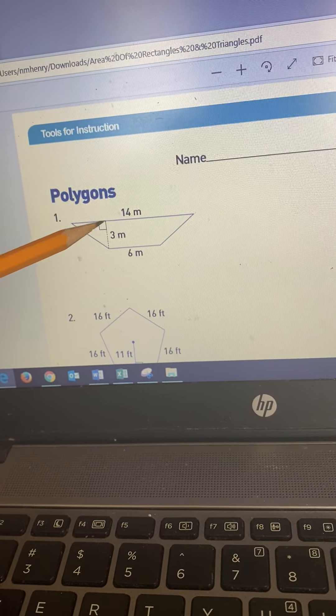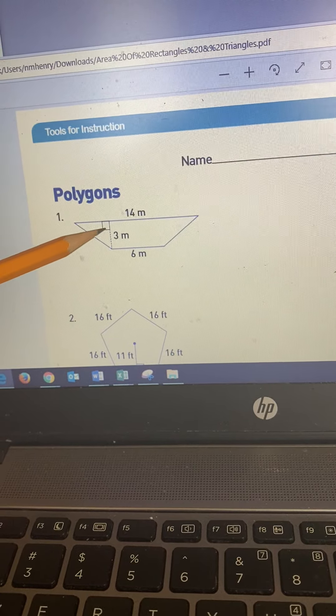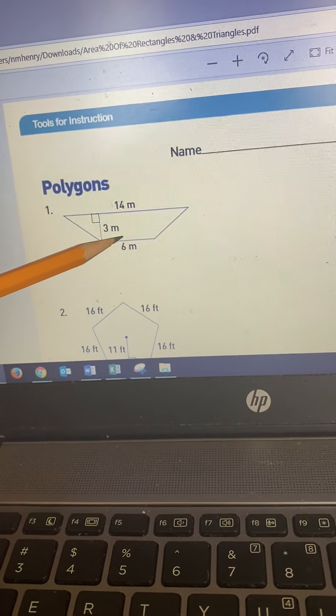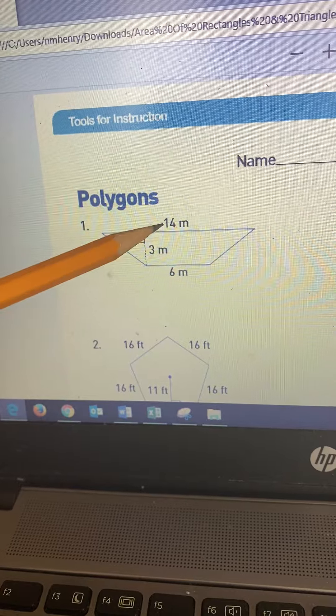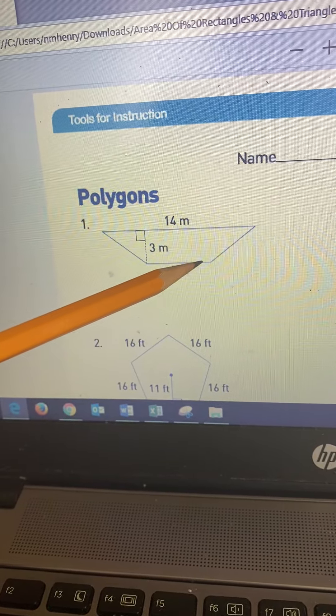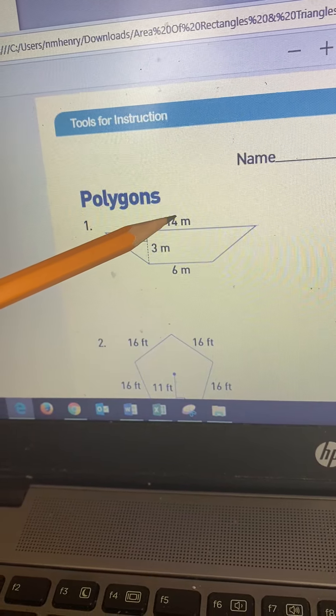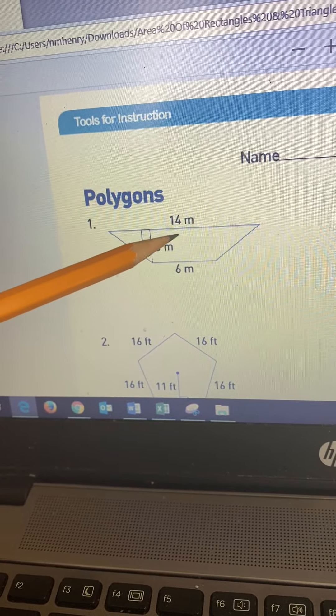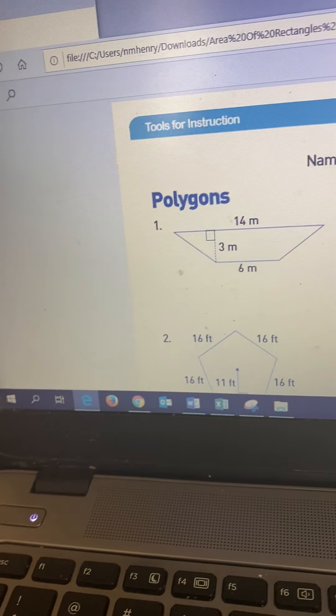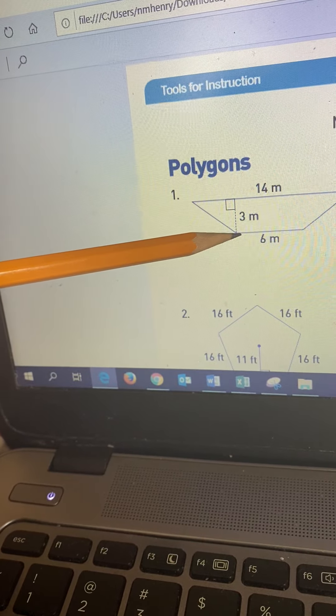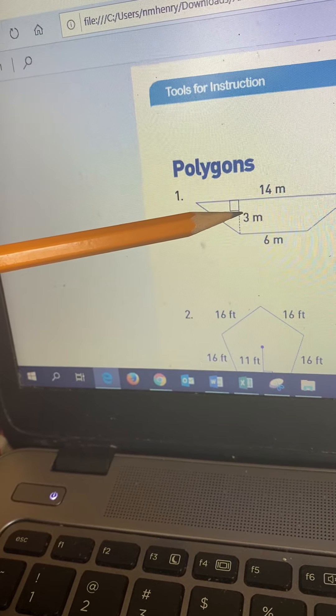Now right here we have this figure here is a trapezoid. Now a trapezoid actually has its own formula, and that formula is one half the height times base one plus base two. So it's the sum of base one and base two, which is 20 times one half the height, which is three, that would be one and a half.